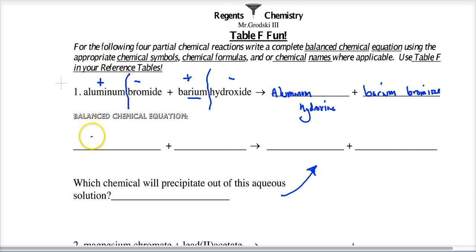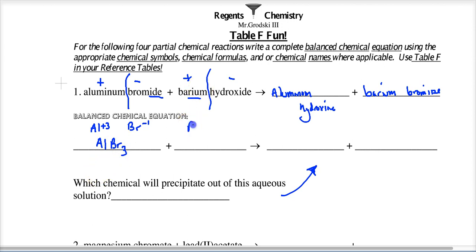For aluminum bromide: aluminum from the periodic table becomes plus 3; the -ide ending means it's binary, so it's Br, which is negative 1. Crisscross gives AlBr₃. For barium hydroxide: barium becomes plus 2; hydroxide from Table E is a polyatomic ion with a charge of negative 1. Crisscross gives Ba(OH)₂ — with 2 in parentheses.